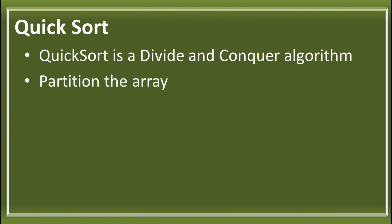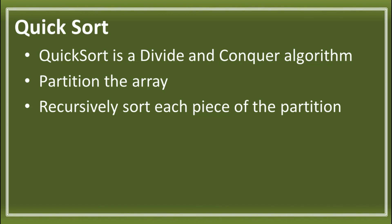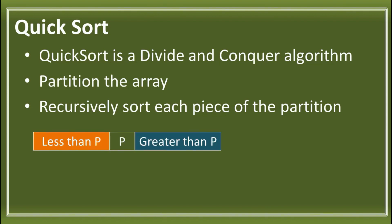In QuickSort, we're going to partition the array and recursively sort each part of the partition. Basically, when we partition the array, it works like this: we have the 'less than P' part and we have P, wherein P is called the pivot, and the 'greater than P' part. All smaller values go to the left part, and all larger values go to the right part or partition.